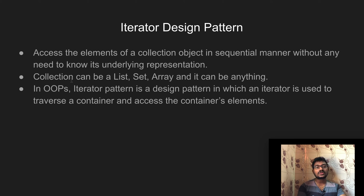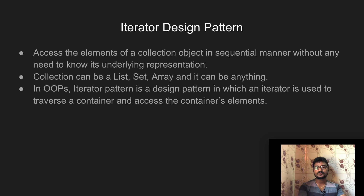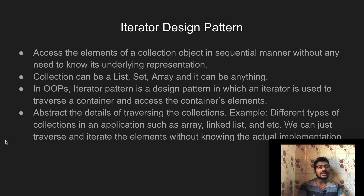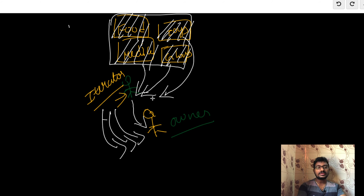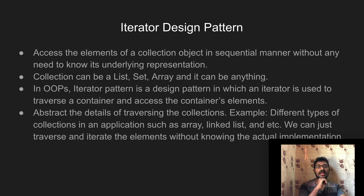In object-oriented programming, the iterator pattern is a design pattern in which an iterator is used to traverse a container and access the container's elements. We already discussed this using the container example. The pattern also abstracts the details of traversing the collection — the owner does not need to know the implementation details of accessing the packages; those difficulties are abstracted away and handled by the iterator.